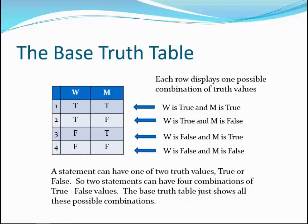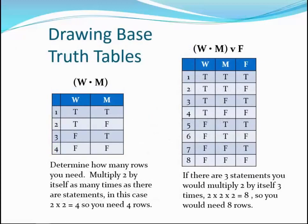A compound statement with three component statements has eight combinations of values, so we would need eight rows in the table. If there was a fourth statement, we'd need 16 rows and so on. In this presentation, I've numbered the rows for easy reference, but usually in logic, small tables aren't drawn with the rows numbered. Drawing the base table is a mechanical process — it doesn't require inferring anything, just having a strategy for drawing all the values without repeating the pattern of true-false values in the rows.